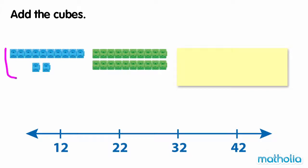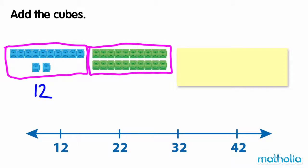Add the cubes. There are 12 blue cubes and there are 20 green cubes. We need to find 12 plus 20. 20 is two tens. To add the cubes, we can start at 12 on a number line and add two tens.